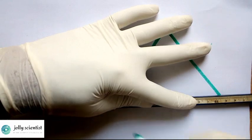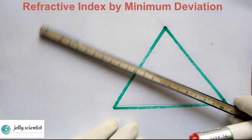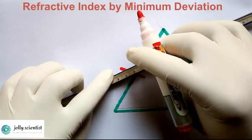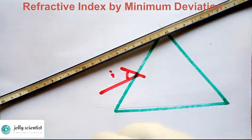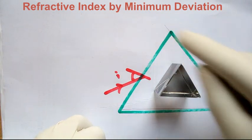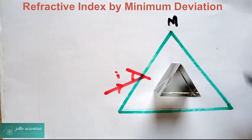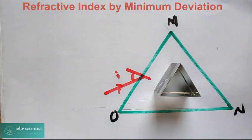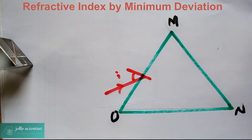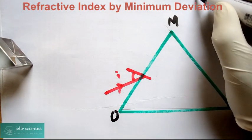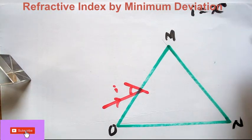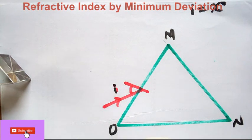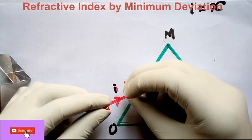An angle of incidence of say X degrees is given to you. After being given the triangle, you are told to draw the outline of the prism — maybe tagging the vertices M, N, and O. After drawing the outline, take the prism out. You then find your angle of incidence, say I equals X degrees, which could be 30, 40, or whatever value is given.